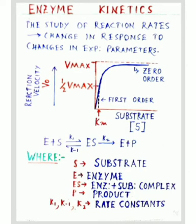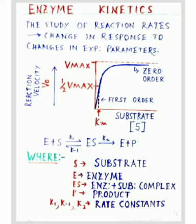Now let us discuss enzyme kinetics. The study of the rate of reaction of an enzyme-catalyzed reaction and the various factors affecting it is referred to as enzyme kinetics — this is the change in response to changes in experimental parameters. Enzymes enhance the rate of reaction enormously, 10^7 to 10^14 fold, as compared to an ordinary uncatalyzed chemical reaction without enzymes. Kinetic theory of reactions and thermodynamic considerations help in understanding this role of enzyme and the energy barrier.